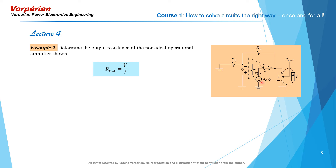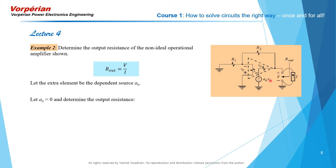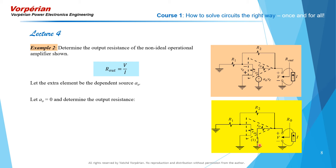We apply the extra element theorem and designate A0, the dependent source, as the extra element. But in this case, we set its value first to A0 equal to zero — because if we let A0 go to infinity, the output impedance goes to zero, and we cannot write our answer as zero multiplied by a correction factor. When we short circuit where the dependent source is with A0 equal to zero, the output resistance is R0 in parallel with R2 plus R1∥Rn.